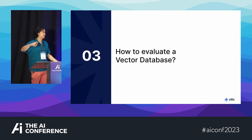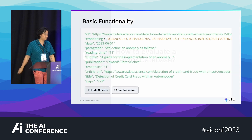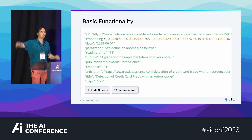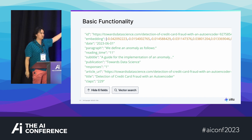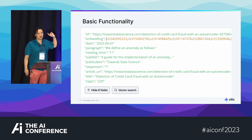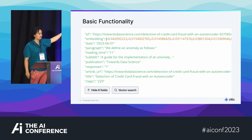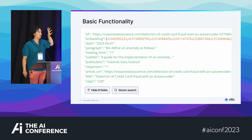So how do you evaluate a vector database? What do you care about? This is the basic functionality and the kind of data that you store. Pretty much everybody who works with a NoSQL database understands this data — we're storing some JSON data. The main difference is instead of querying on a partition key and a primary key, we're querying on an embedding. The embedding is our main key and the main thing we're being indexed on.